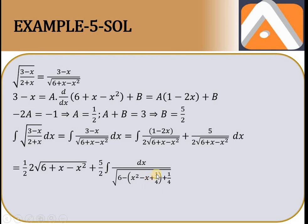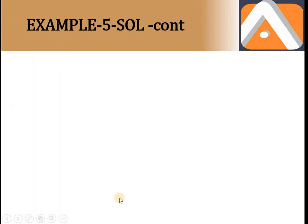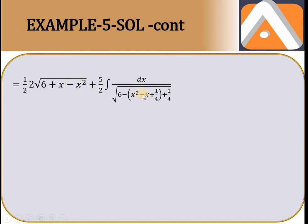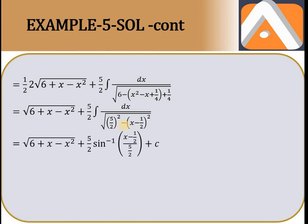1/4 add aur subtract karo: 6 + 1/4 = 25/4. Toh (5/2)² - (x - 1/2)² ban jaata hai. Yeh a² - x² form hai: formula 1/√(a² - x²) ka integration = sin⁻¹(x/a). Idhar x ki jagah (x - 1/2) aur a ki jagah 5/2 rakhte hain. Simplify karo toh final answer: sin⁻¹((2x - 1)/5) + C aa jaata hai.